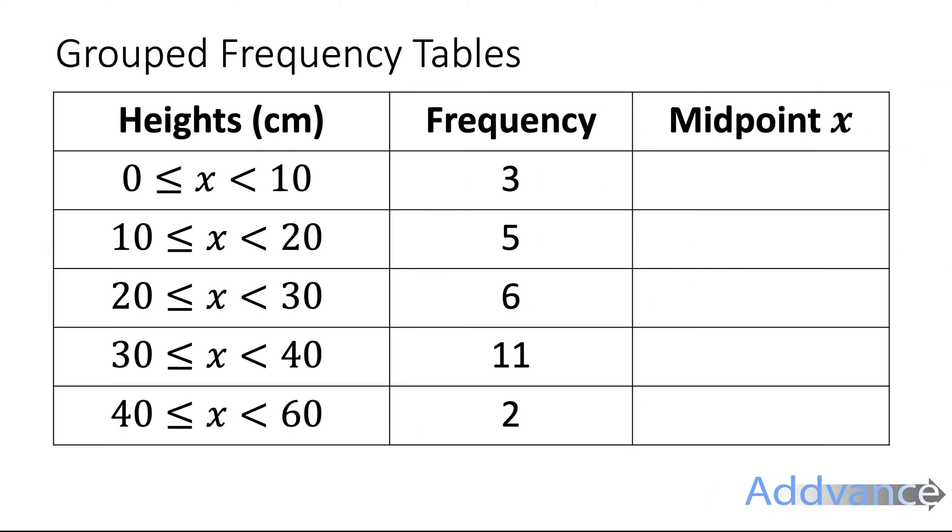First we're going to add a column for the midpoint. So in the exam you'll probably have to draw this column on yourselves. It's the midpoint of the class. From 0 to 10 the midpoint between 0 and 10 is 5. Between 10 and 20 the midpoint is 15. Between 20 and 30 the midpoint is 25.